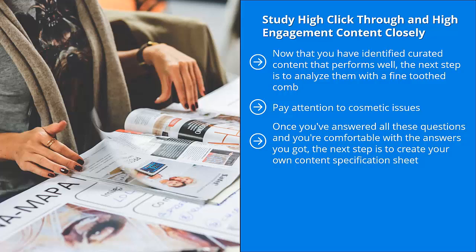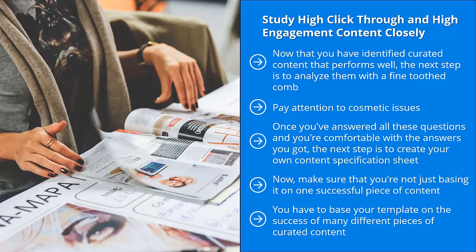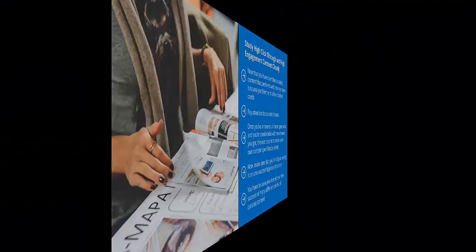Once you've answered all these questions and you're comfortable with the answers you got, the next step is to create your own content specification sheet — this is going to be your template. Make sure that you're not just basing it on one successful piece of content. That third-party content might be a fluke; the company behind it might just have gotten lucky and that piece of content went viral. You have to base your template on the success of many different pieces of curated content. This way, you can be more confident that even if you barely comply with all the specifications, you would at least get some decent and positive results.